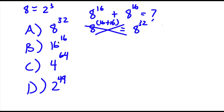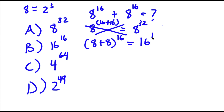For B, what they did was keep the exponent the same and add the bases. So they did 8 plus 8 to the power of 16, which equals 16 to the power of 16. And this method is wrong as well — you can't add bases like that. So it's not B, it's not A.